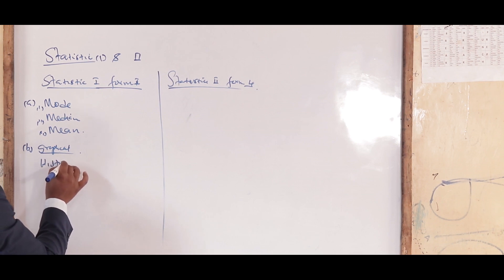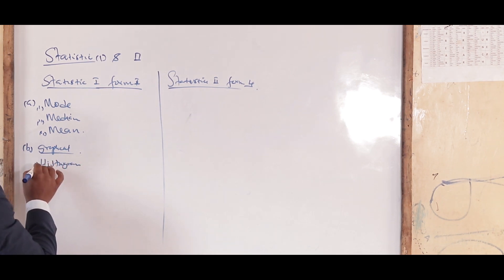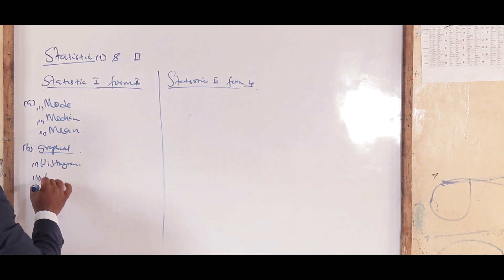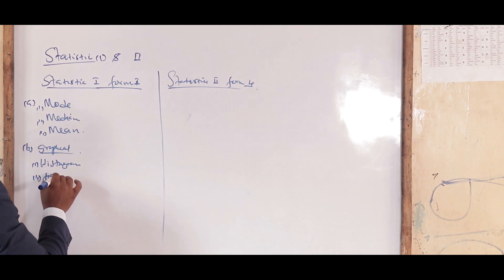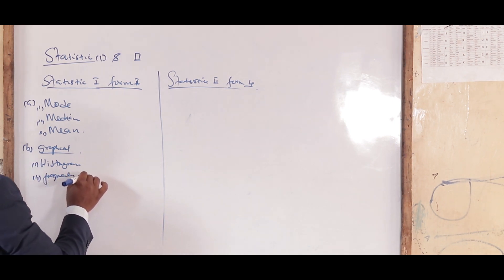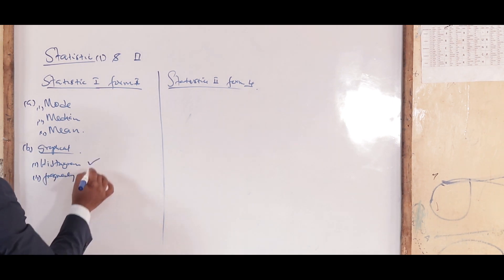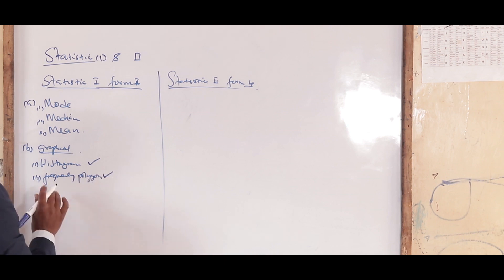Part B of Statistics 1 is the graphical part, which deals with the histogram and the frequency polygon. You have to cover both of those.